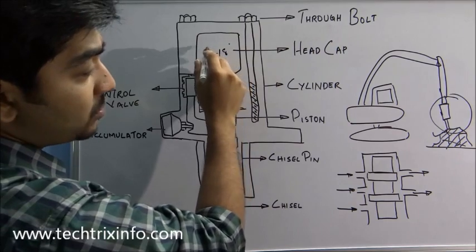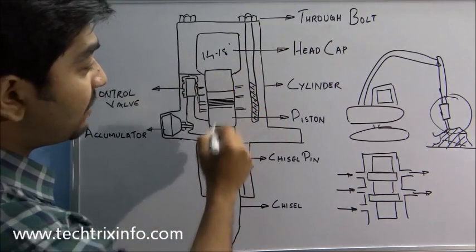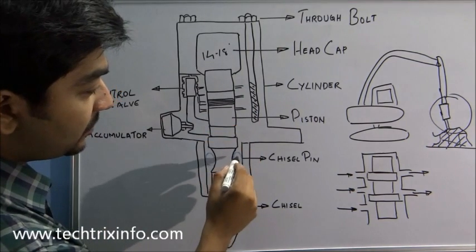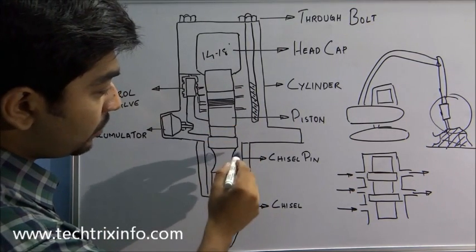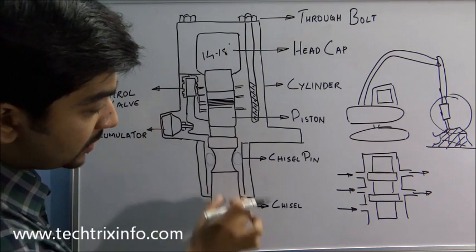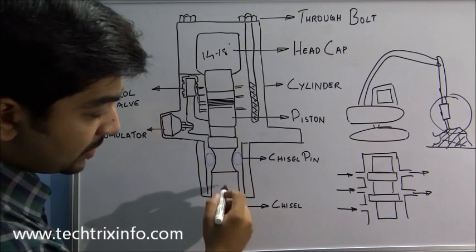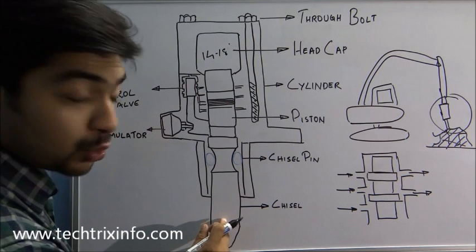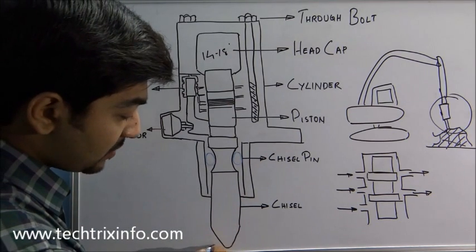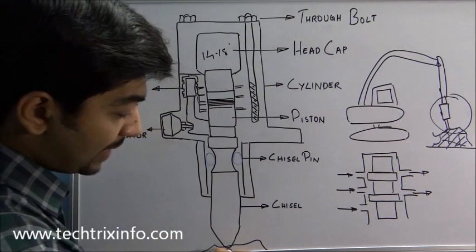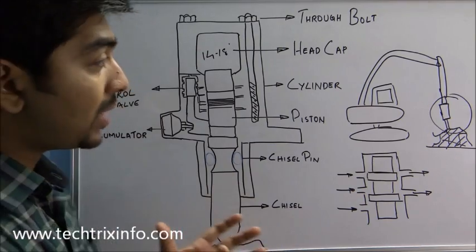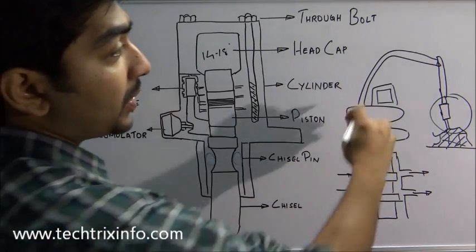Then we have the piston here. This is a chisel pin, which supports the chisel so that it can move in this section. This is the chisel — actually called the tool — which is the part that will be engaging with the rock. So the chisel engages with the rock piece.